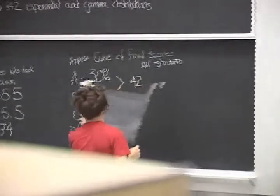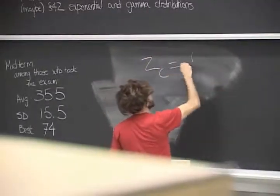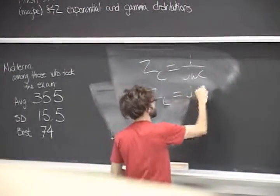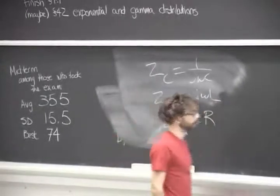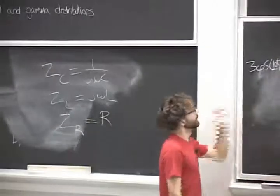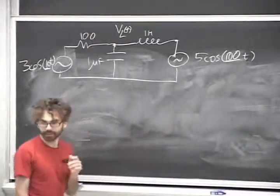1 over j omega C. j omega L. R equals R. So if we wanted to use this thing, we have two different omegas. So that seems bad. Can we still use phasors? The answer is yes.